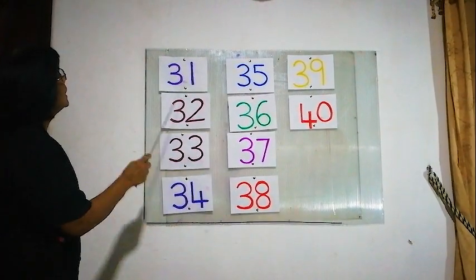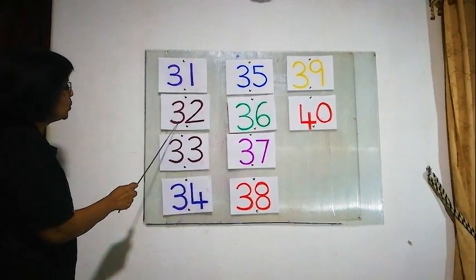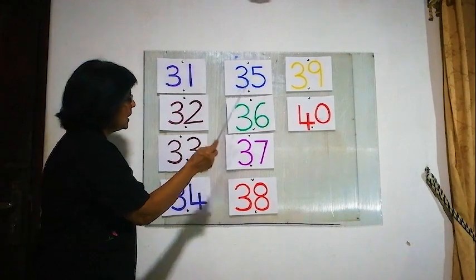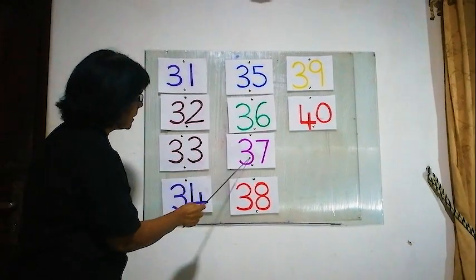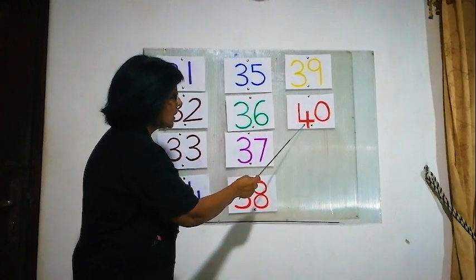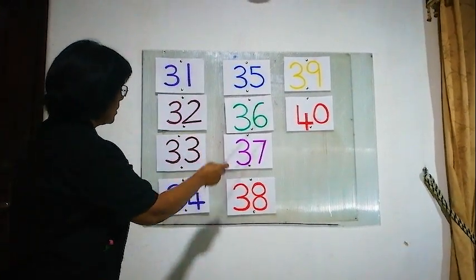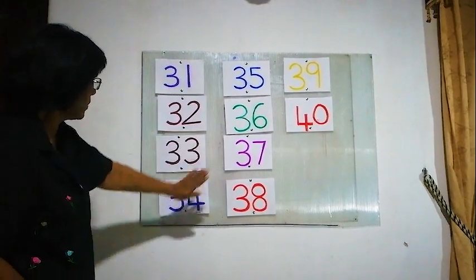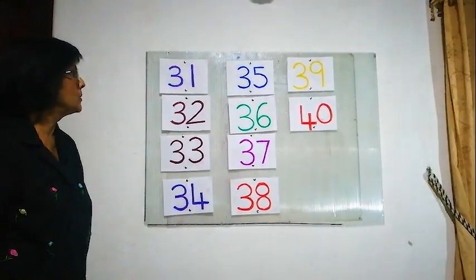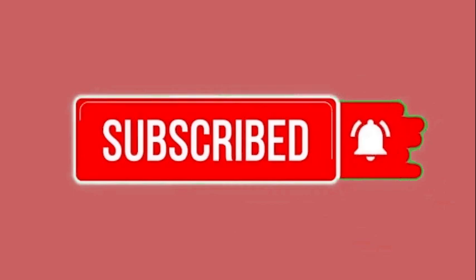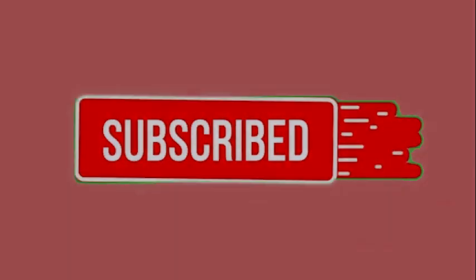Now count from the beginning: 31, 32, 33, 34, 35, 36, 37, 38, 39, 40. All the numbers are in order, 31 to 40. Thank you very much for listening.